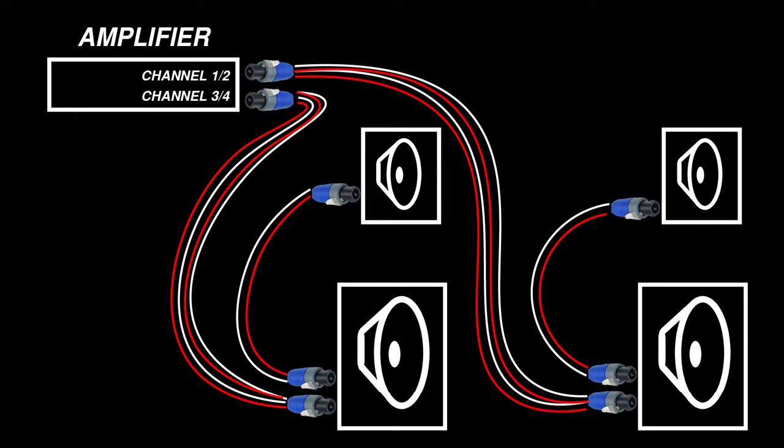Let's say you've got a separate subwoofer cabinet and a main speaker cabinet on each side of the stage. Instead of running a separate cable from the amplifier to each cabinet, you could use an NL4 cable which could carry the subwoofer signal on pin set one and the main speaker signal on pin set two.